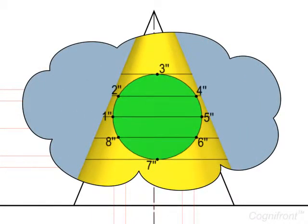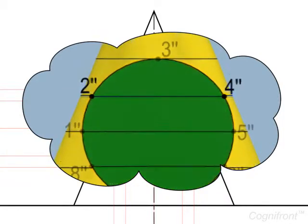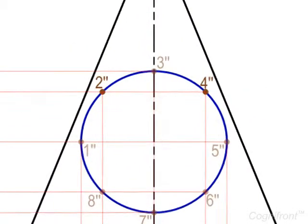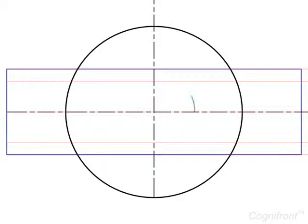In the side view, observe the horizontal plane passing through the points 2-double-dash and 4-double-dash, cutting the cone at points Q and Q. To project this view, draw a line through the points 2-double-dash and 4-double-dash meeting the cone at Q and Q. In the top view, draw a circle with O as center using the length QQ as diameter.